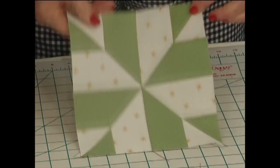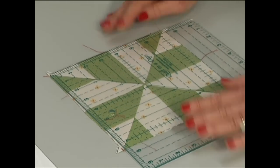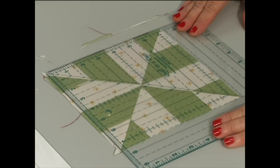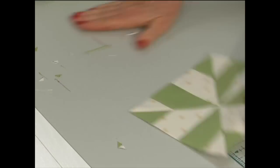Take your nine and a half inch square up ruler and square it to seven and a half inches. Make two stacks for each of the mirror image blocks.